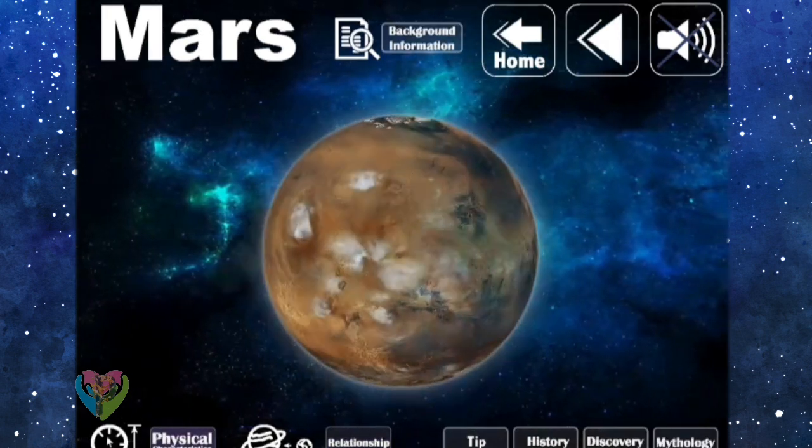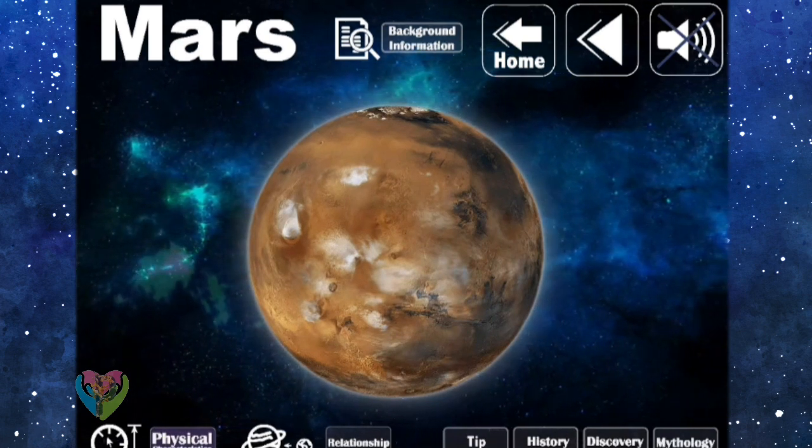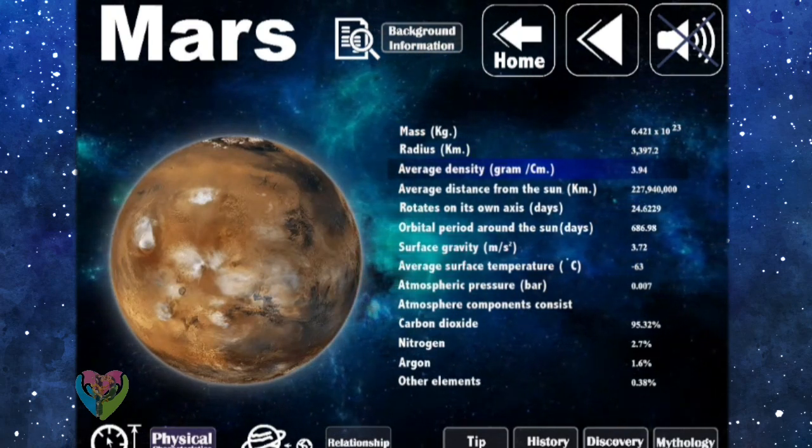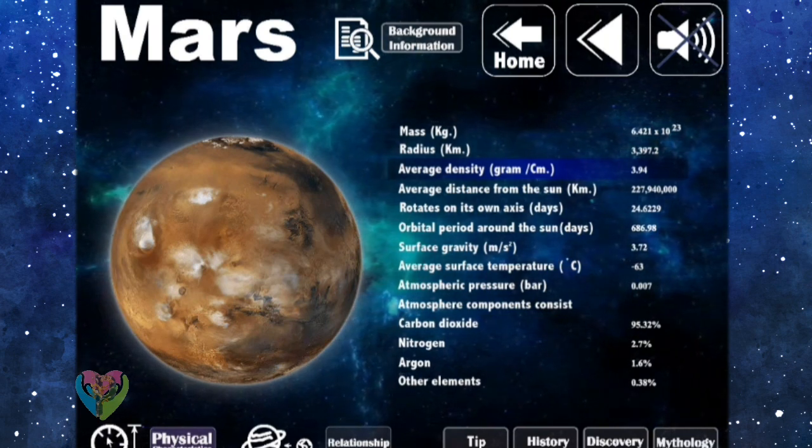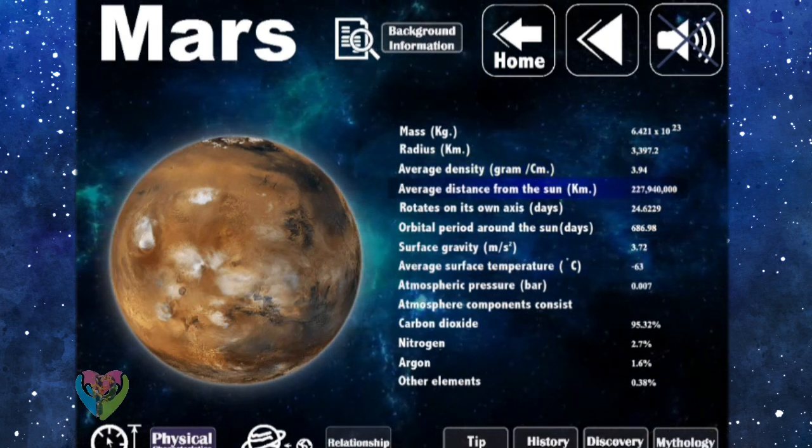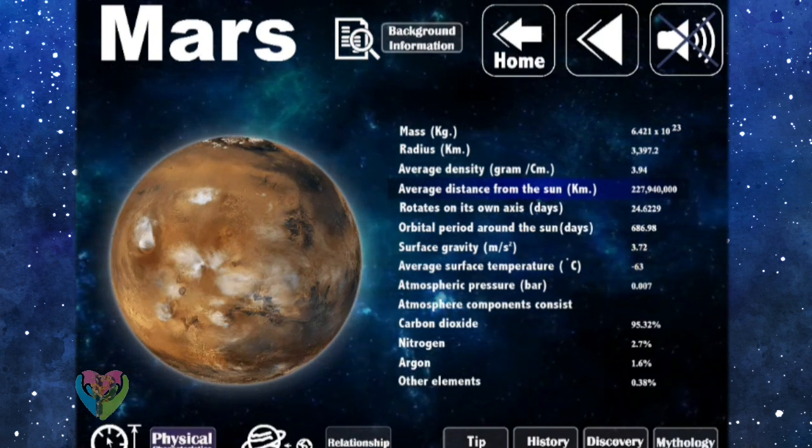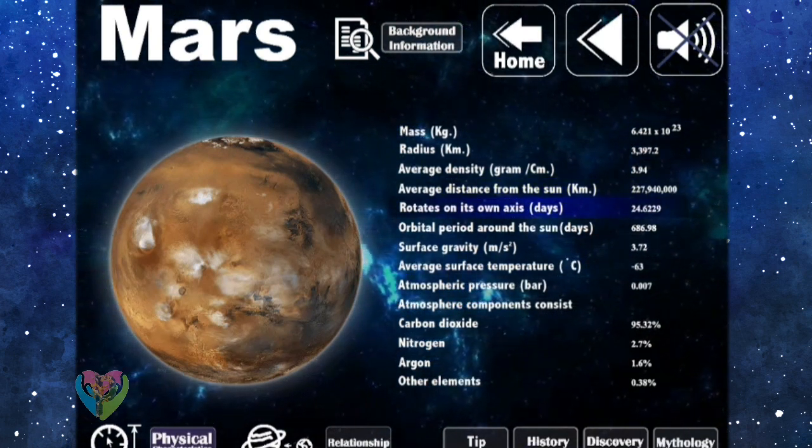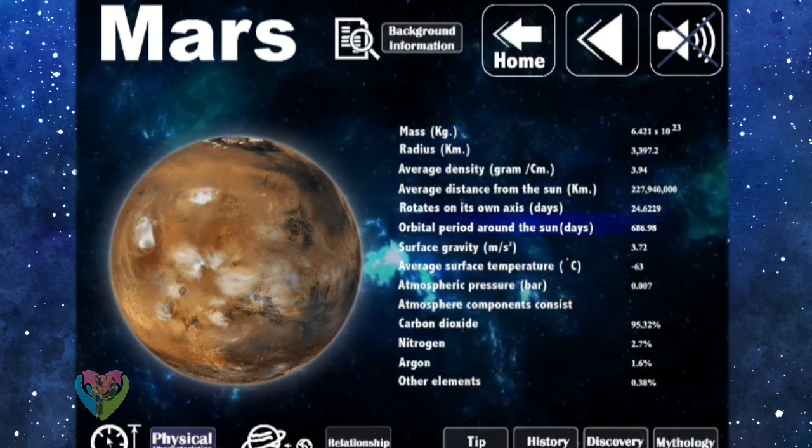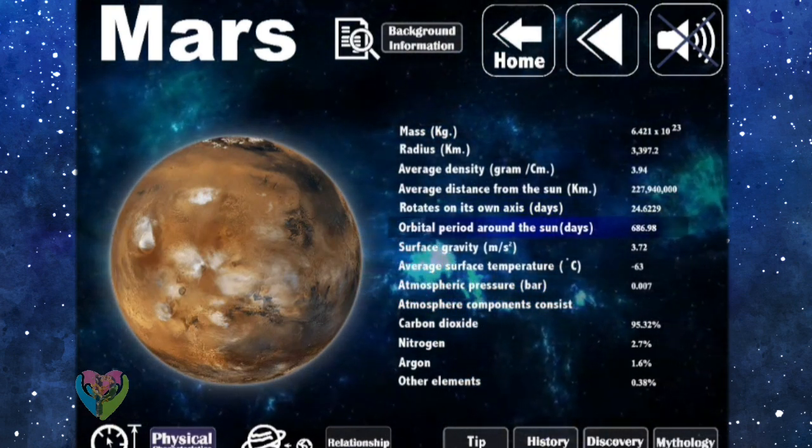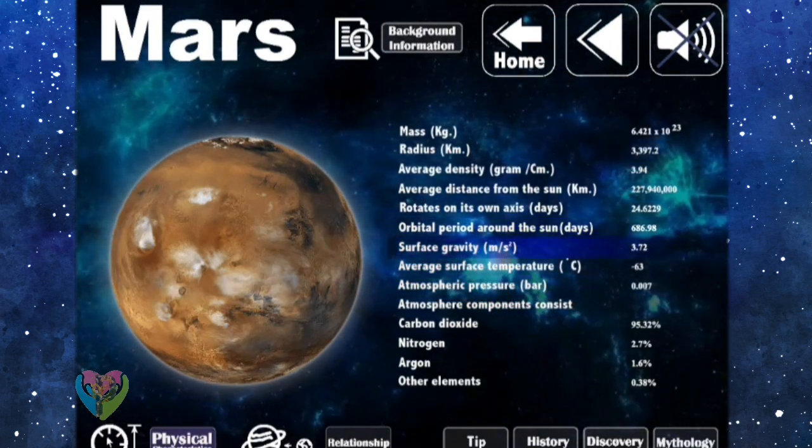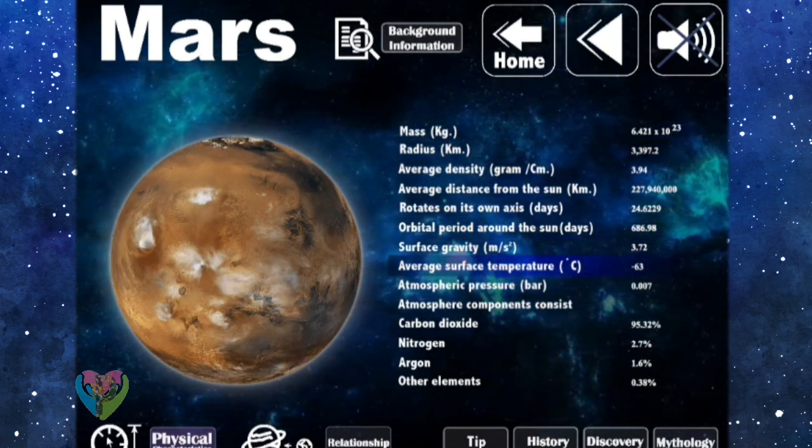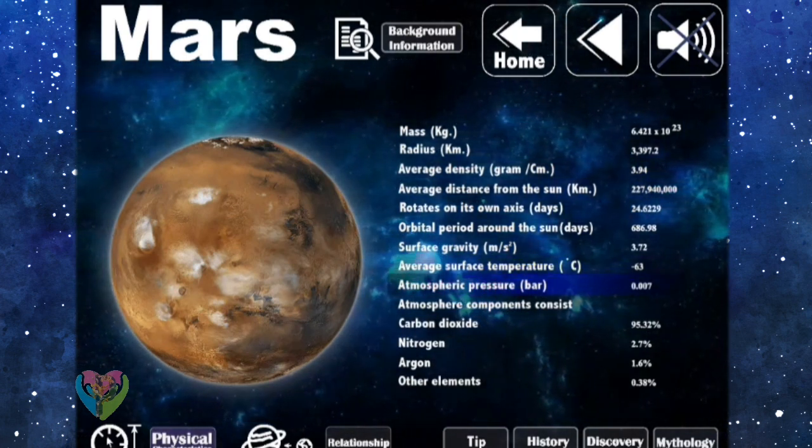Physical information: Mass is 6.421 times 10 to the 23 kilograms. The radius is 3,397.2 kilometers. Average density is 3.94 grams per cubic meter. Average distance from the sun is 227,940,000 kilometers. It rotates on its own axis in 24.6229 days. Orbital period around the sun is 686.98 days. Surface gravity is 3.72 meters per square second.